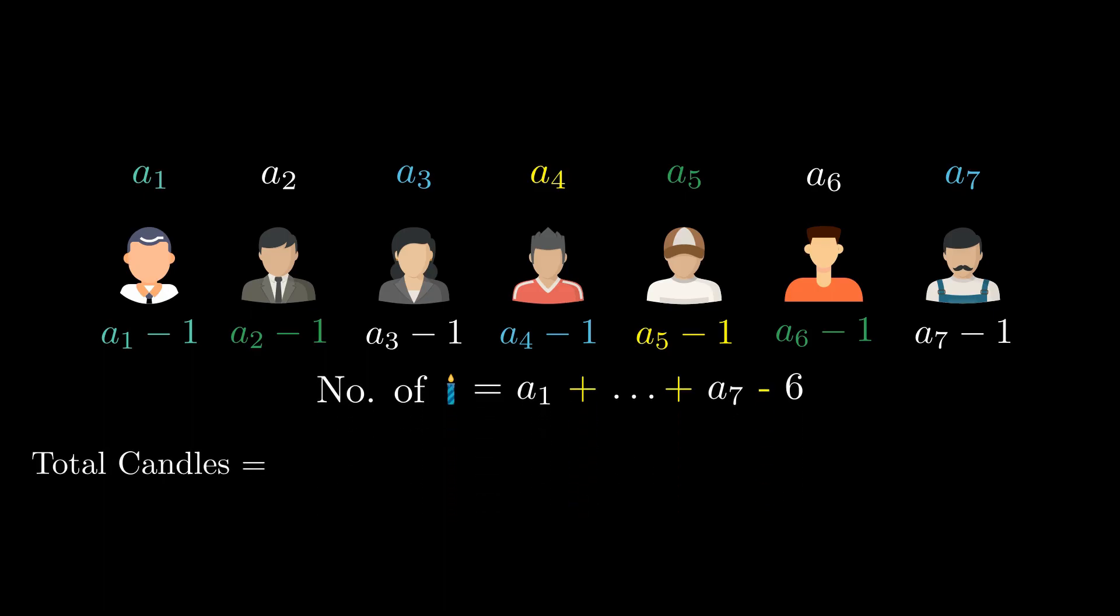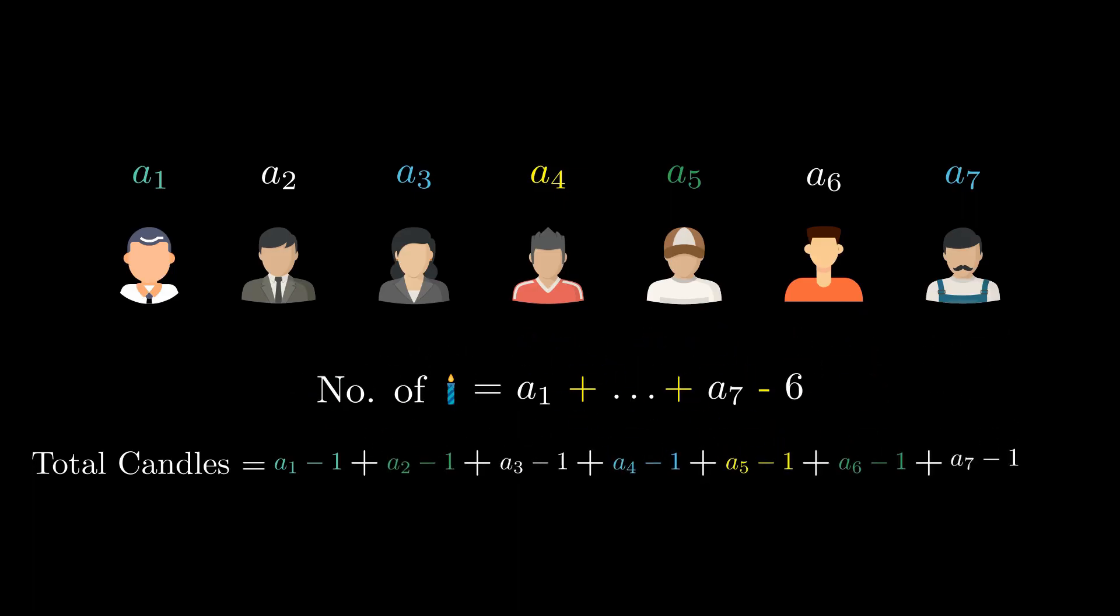When we add up the number of candles in our hypothesis, they fall short of the total available. The total number of the candles becomes A1 plus A2 till A7 minus seven. As the sum of the A1 plus A2 till A7 minus six is larger than the sum of the ages minus seven. In fact, we're left with one extra candle to distribute. And that's absurd!